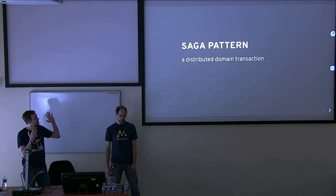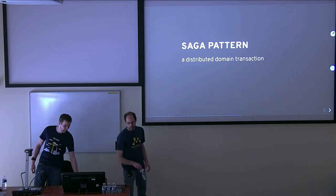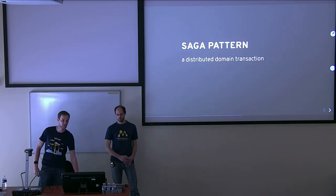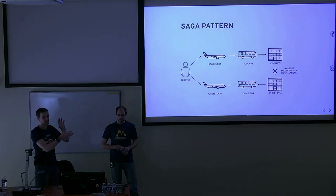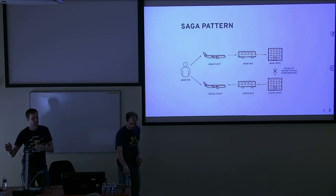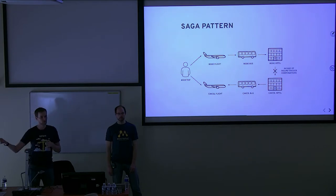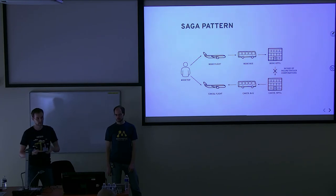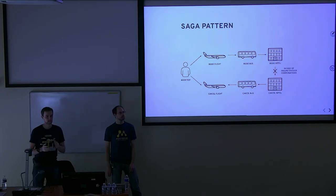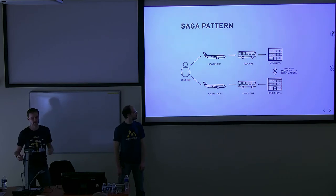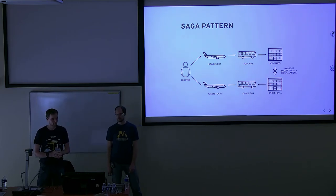So we need some kind of distributed domain transaction — and luckily for us it already exists, it's called the Saga pattern. A picture is worth a thousand words, so let's take a look. We could consider the entire travel booking a transaction: book a flight to get to another country, then a bus from the airport to a hotel, then the hotel itself. But these providers don't have anything in common, and implementing a traditional transaction could be difficult. So we need a way to manage failure — and that's the Saga pattern.